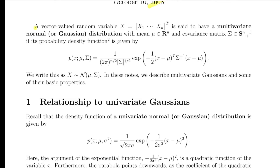A vector-valued random variable x is said to have a multivariate normal Gaussian distribution with mean mu of n dimensions and a covariance matrix which is a square matrix of n cross n. The density function is defined as this essentially.